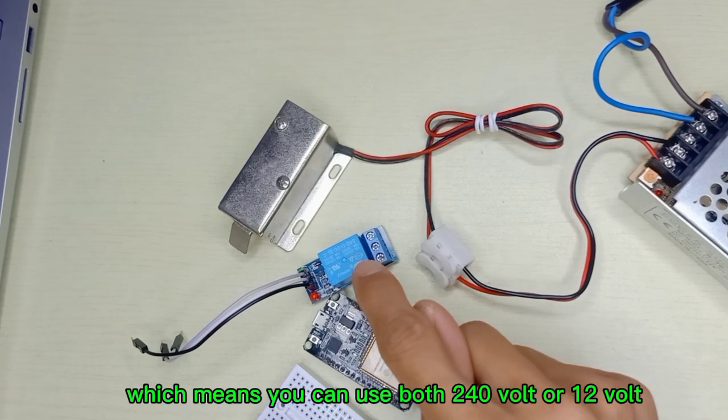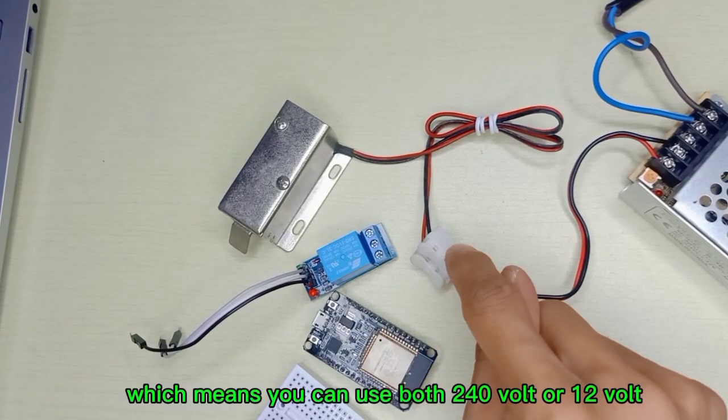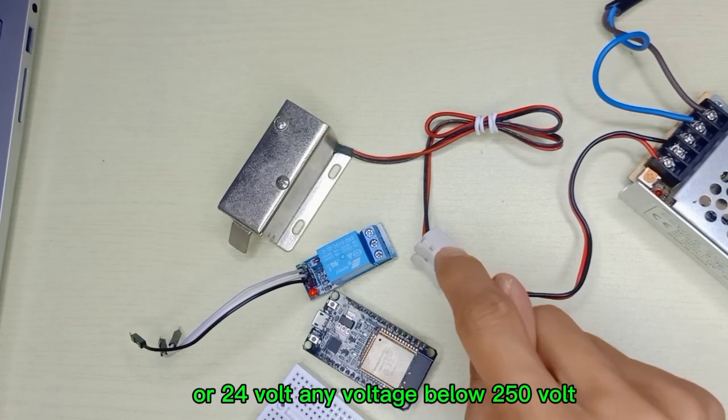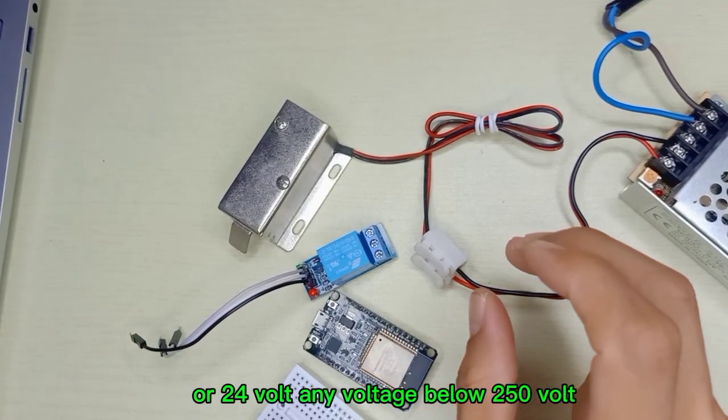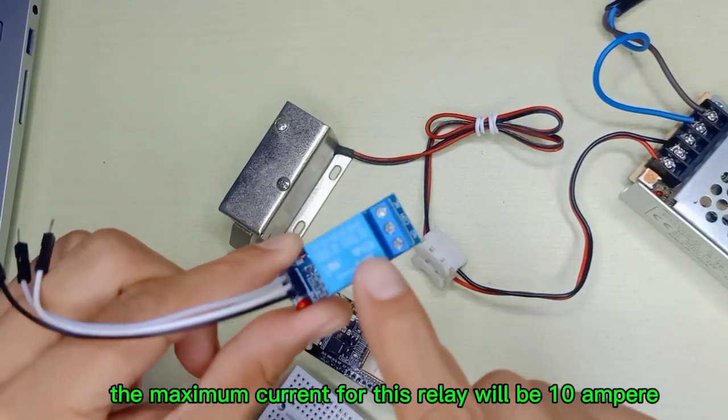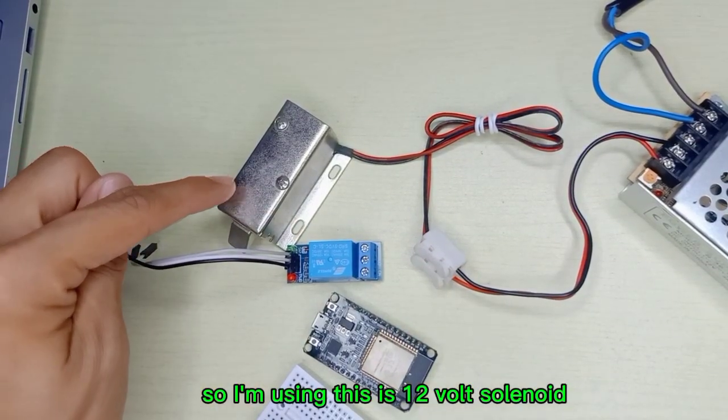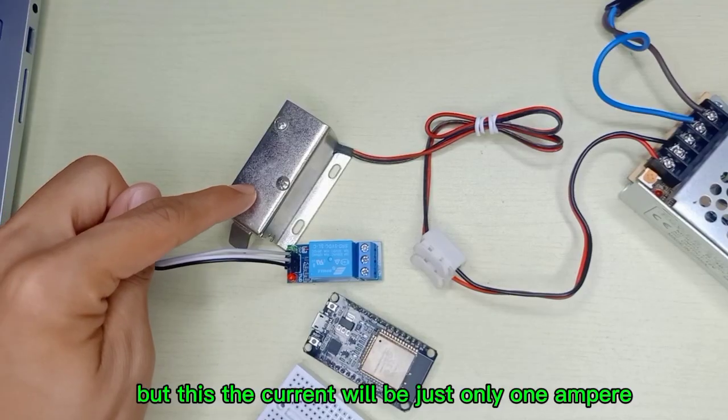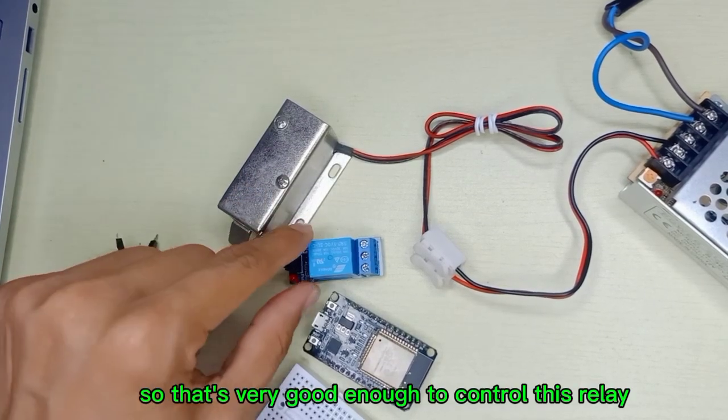High voltage means you can use 240 volt, 12 volt, or 24 volt - any voltage below 250 volt. The maximum current for this relay is 10 ampere. I'm using a 12 volt solenoid but the current will be just only 1 ampere, that's very low current so that's good enough to control this relay.